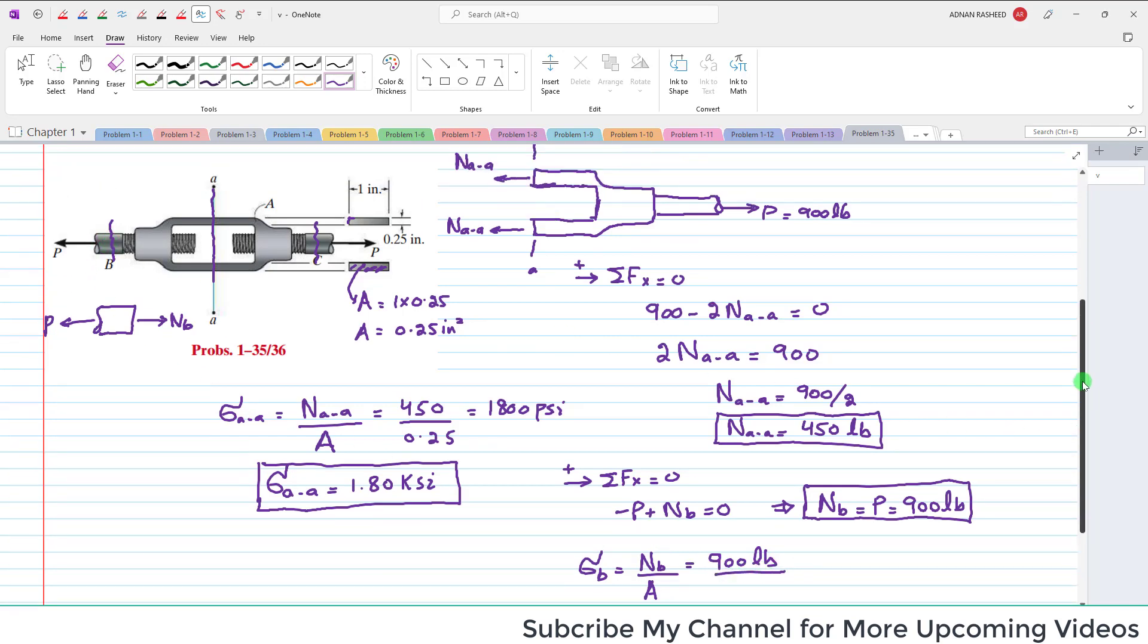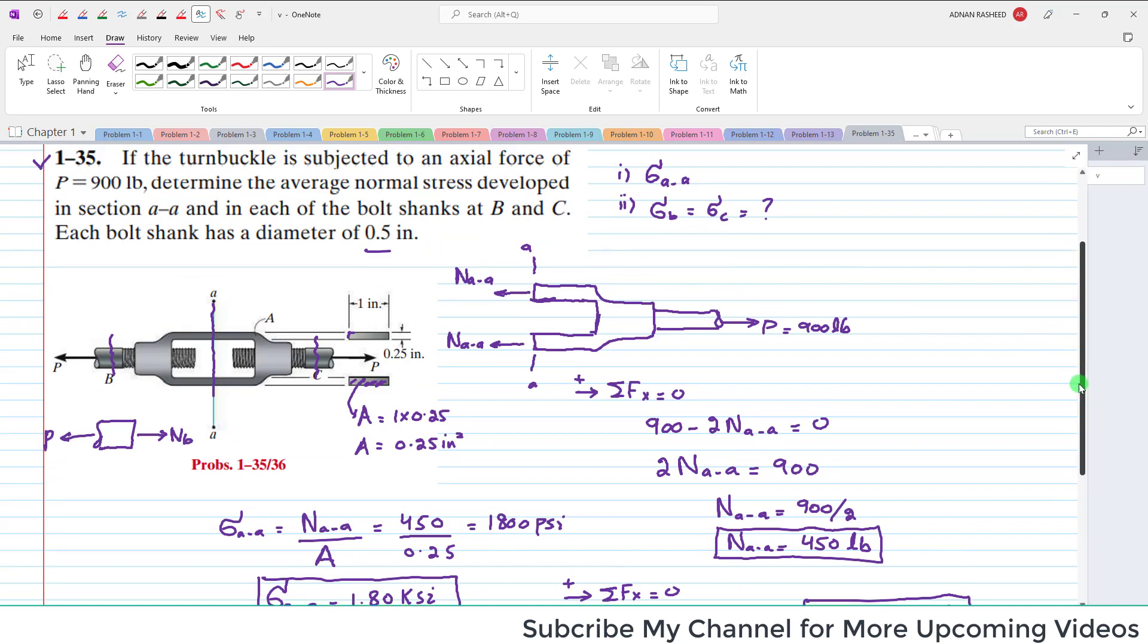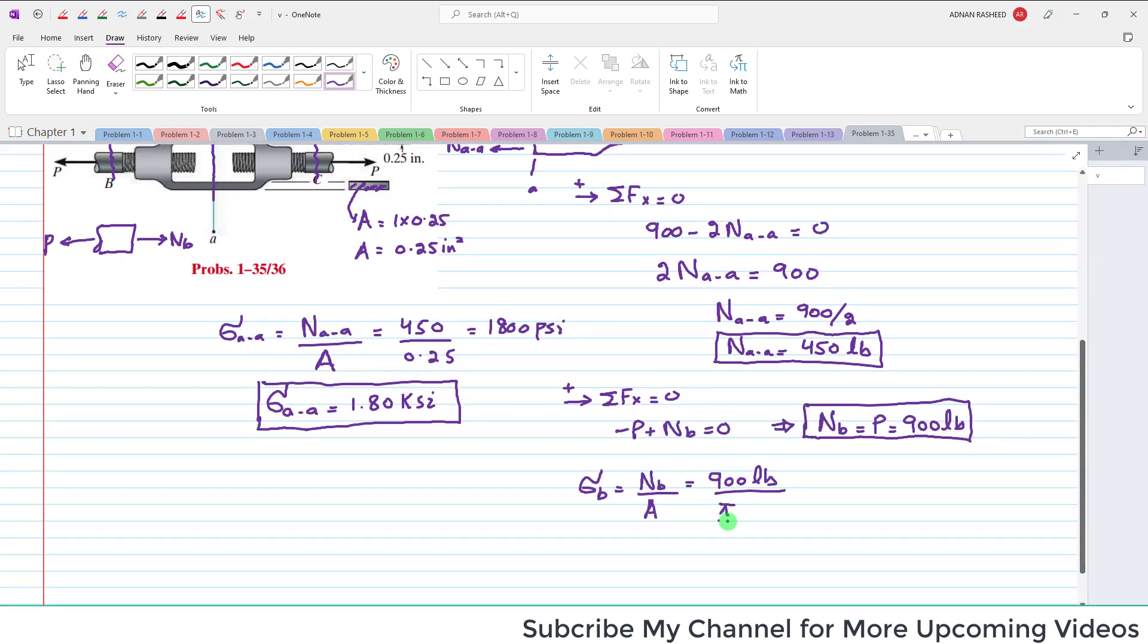Since the bolt shank is circular and its diameter is 0.5 inch, you can put in the formula pi by 4 times 0.5 squared. When you calculate this, you will get the value which is equal to 4584 psi, or you can say sigma B is equal to 4.58 ksi.